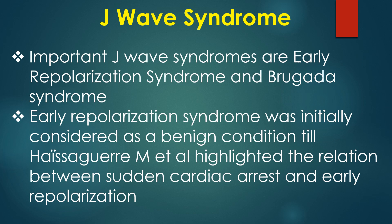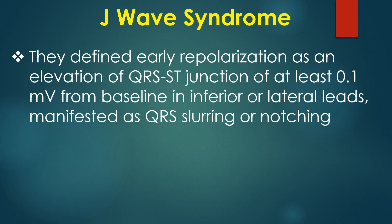Important J wave syndromes are early repolarization syndrome and Brugada syndrome. Early repolarization syndrome was initially considered a benign condition until Isagre and associates highlighted the relation between sudden cardiac arrest and early repolarization. They defined early repolarization as an elevation of the QRS-ST junction of at least 0.1 mV from baseline in inferior or lateral leads, manifested as QRS slurring or notching.